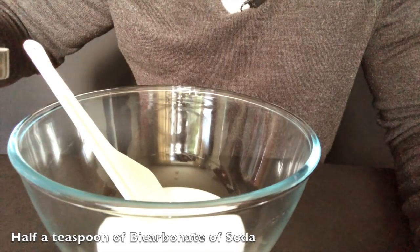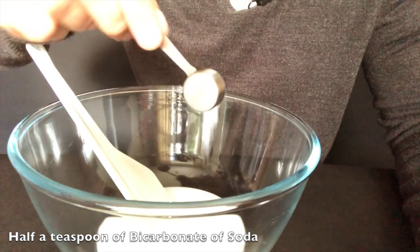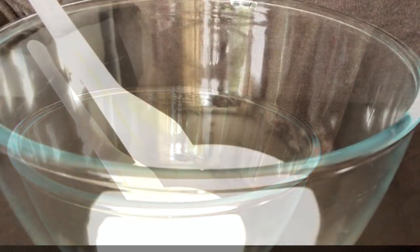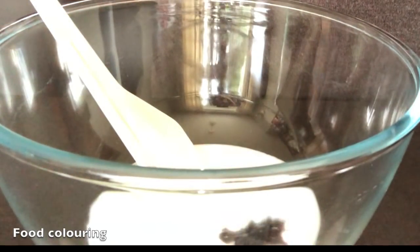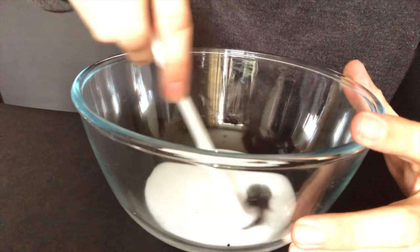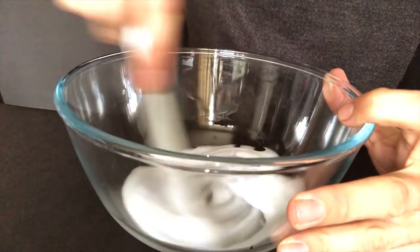Then you need to add about half a teaspoon of bicarbonate of soda. If you want to add food coloring or even glitter, now is the time to do it. So I'm going to pop a few drops of purple food coloring in, and then give it a good mix.